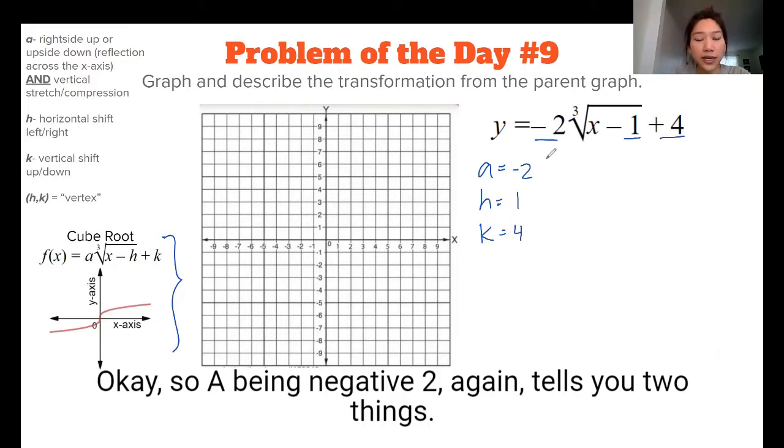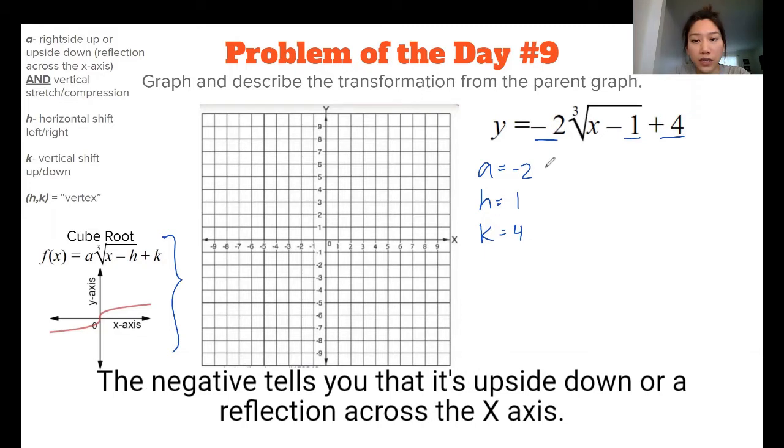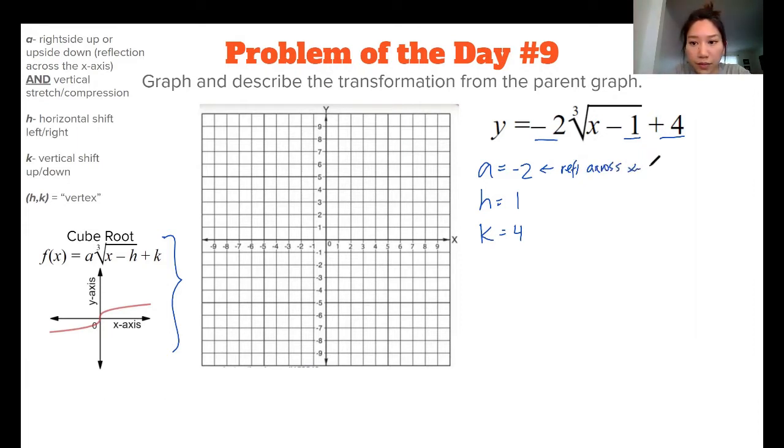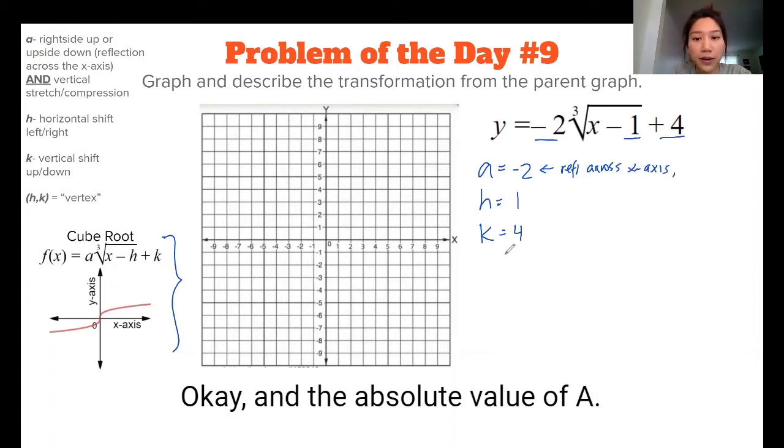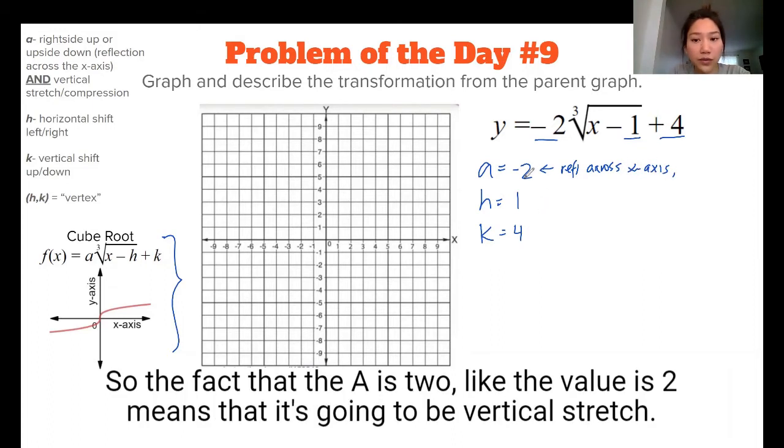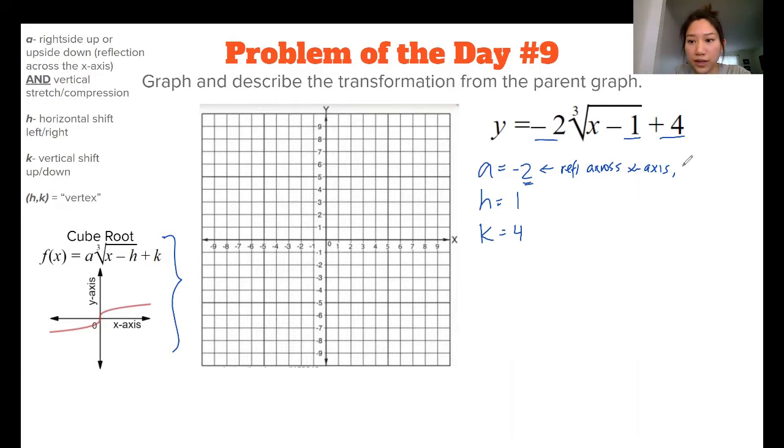So a being negative 2, again, tells you two things. The negative tells you that it's upside down or a reflection, reflection across the x-axis. And the absolute value of a, so the fact that the a is 2, like the value is 2 means that it's going to be vertical stretch. So vertical stretch by a factor of 2.